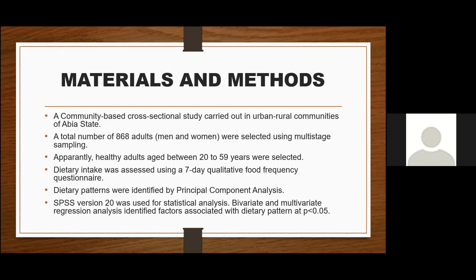For the materials and methods, it was a cross-sectional study carried out in urban and rural communities of Abia State, Nigeria. The community used was Umayia. A total of 868 adults, both men and women, were selected using multi-stage sampling. Apparently healthy adults aged between 20 and 59 years were selected. Dietary intake was assessed using a seven-day qualitative food frequency questionnaire. Dietary patterns were identified by principal component analysis, and SPSS was used as the statistical tool.